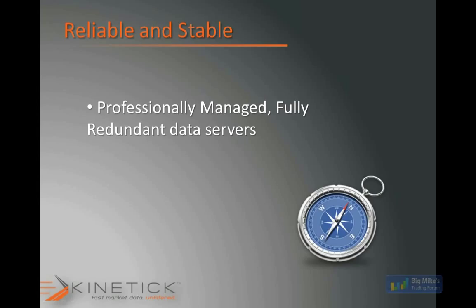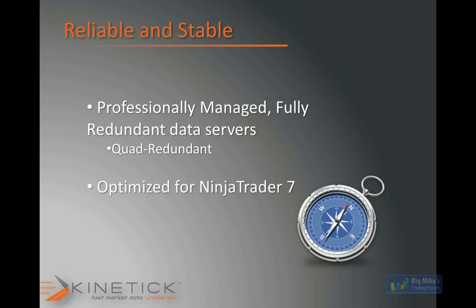The servers that run the data have a quad-redundant data farm where the data comes directly from the exchange. It's professionally managed, and the redundancy means there's never any downtime with the Kinetic Feed. With Kinetic specifically, it's been optimized for NinjaTrader 7, meaning there are no technological barriers between the application and the data. The API layer that normally sits between charting software and the exchange has been eliminated — it's provided directly into the NinjaTrader application, which adds speed.